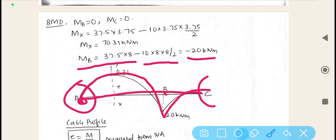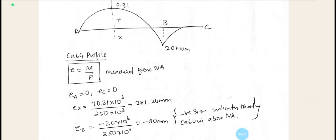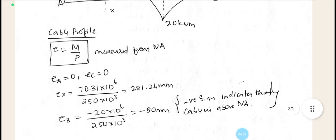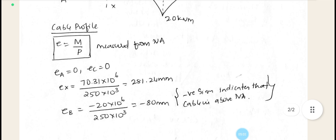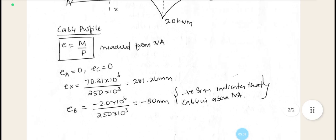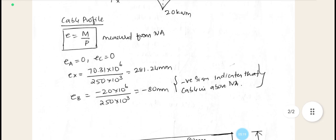And cable profile, in order to find out what is the cable profile, we are making use of the expression E is equal to M by P, which is generally measured from neutral axis. That is eccentricity at point A is 0, eccentricity at point C is 0. Therefore, it is necessary for us to find out the eccentricity is only at the XX distance, that is where your shear force is 0, and we have to find it out at point B.